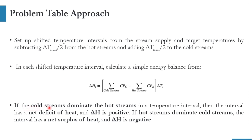One important thing: if the cold stream dominates the hot stream — meaning CP of C is higher than CP of H — then the interval has a net deficit, meaning we need to supply heat, and delta H is positive. If the hot stream dominates the cold stream, the interval has a net surplus of heat and delta H is negative.